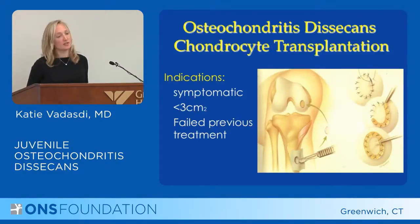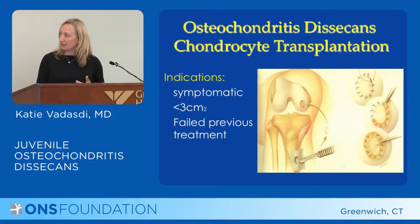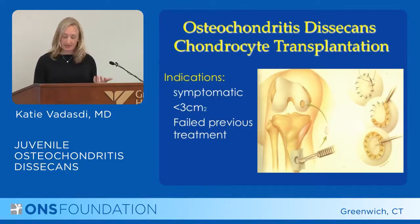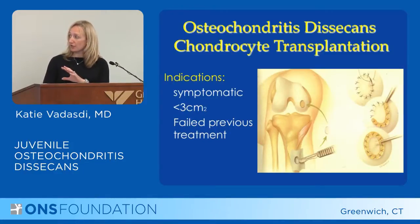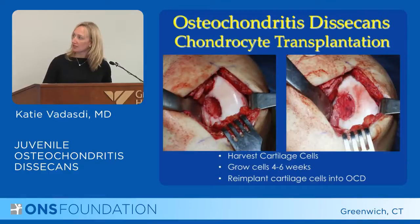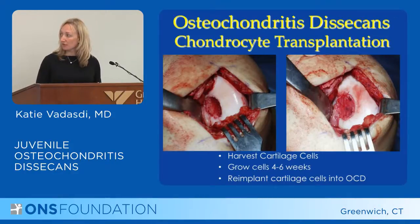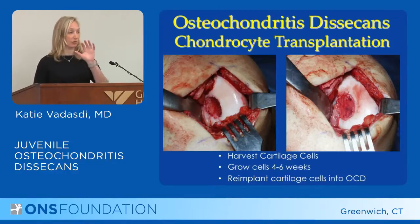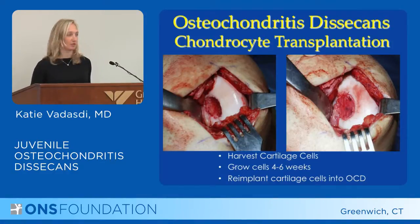The next option is autologous chondrocyte implantation (ACI), often used if a patient has failed previous surgeries like arthroscopic drilling. What you can do is take chondrocytes from the patient, grow them for four to six weeks in the lab, and then re-implant them right inside the defect. You cover it either with periosteum — the lining of the bone, which is often used in kids — or with another graft material to hold it in place, because you can't just put them in and walk away. That stimulates the healing.